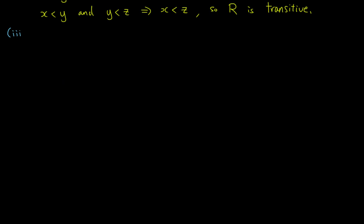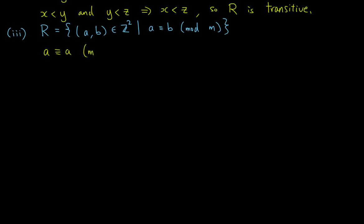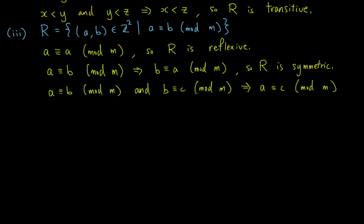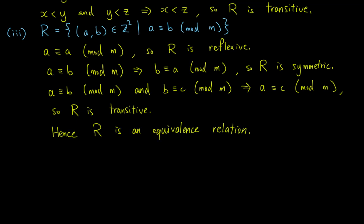As a third example, let R be the set of ordered pairs (a, b) in ℤ² such that a is congruent to b mod m. From modular arithmetic, we know that a is congruent to a mod m for any a, so R is reflexive. Also, a ≡ b mod m implies b ≡ a mod m, so R is symmetric. Also, a ≡ b mod m and b ≡ c mod m implies a ≡ c mod m, so R is transitive. Hence R is an equivalence relation.